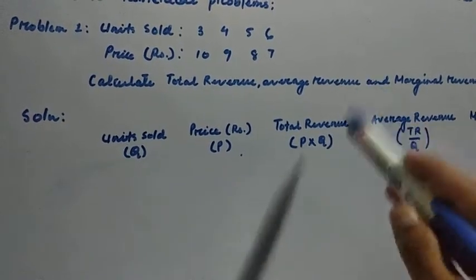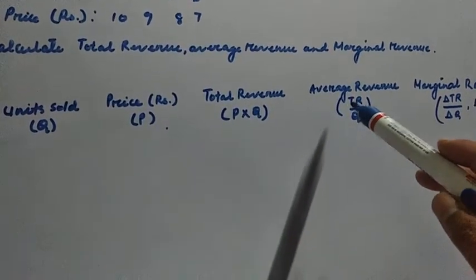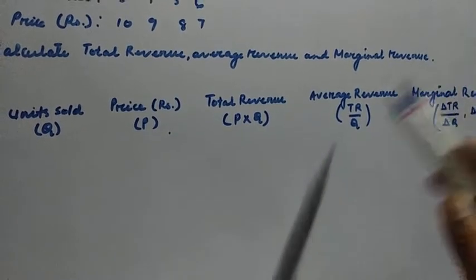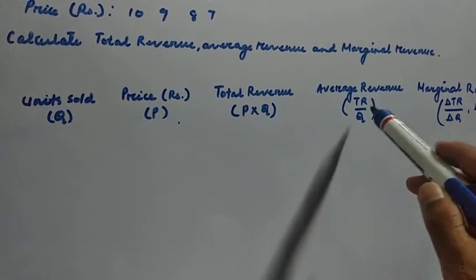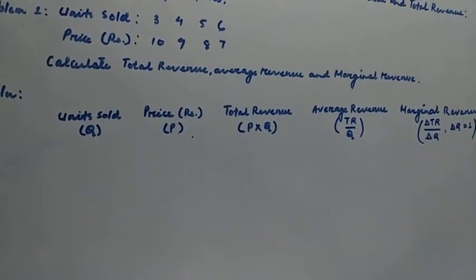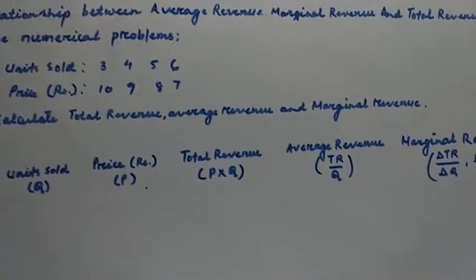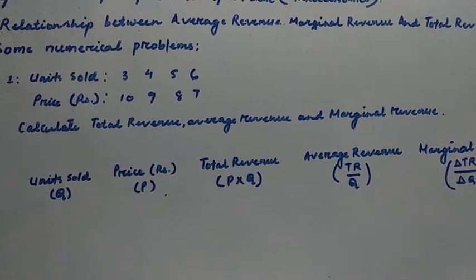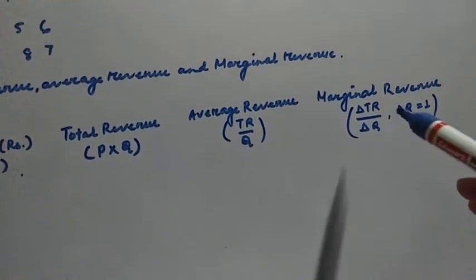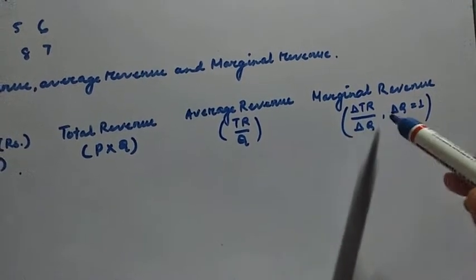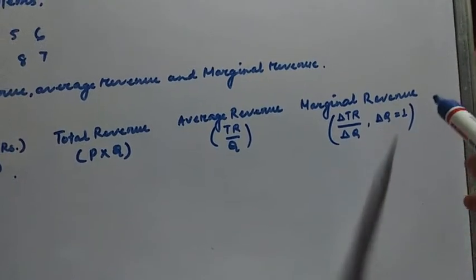We can find average revenue by dividing total revenue by the units of output that is sold or produced. We can find marginal revenue by measuring the change in total revenue when an additional unit of output is sold. Marginal revenue is given by delta TR divided by delta Q, where delta Q equals 1.